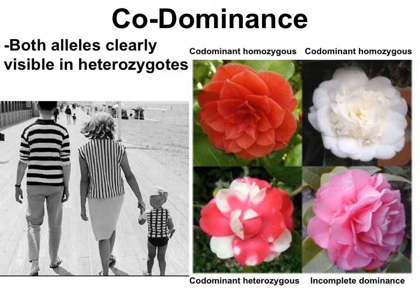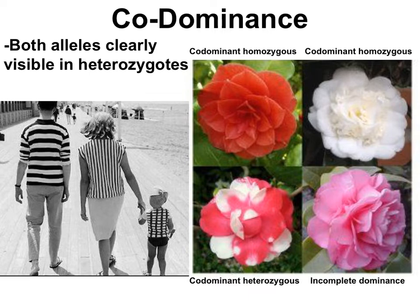A biological example is flower color in a plant species. In cross-pollination between red flowers and white flowers, with co-dominance the resulting F1 offspring would have patches of red and patches of white — you see both phenotypes. This is in contrast to incomplete dominance, where the F1 offspring would have a blended phenotype.